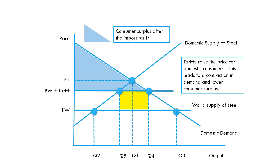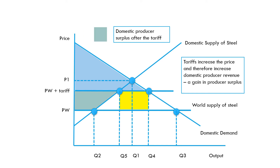Secondly, consumer surplus after the tariff has shrunk — by quite a lot — reduced by the red area shown here, leaving only the smaller blue triangle. So we've seen a big reduction in consumer surplus. The question is: where has this consumer surplus gone? Has someone else benefited? Well, domestic producers are benefiting — their producer surplus has increased by the green area. Some of the lost consumer surplus has gone to the government as tax revenue, and some has gone to domestic producers as increased producer surplus.